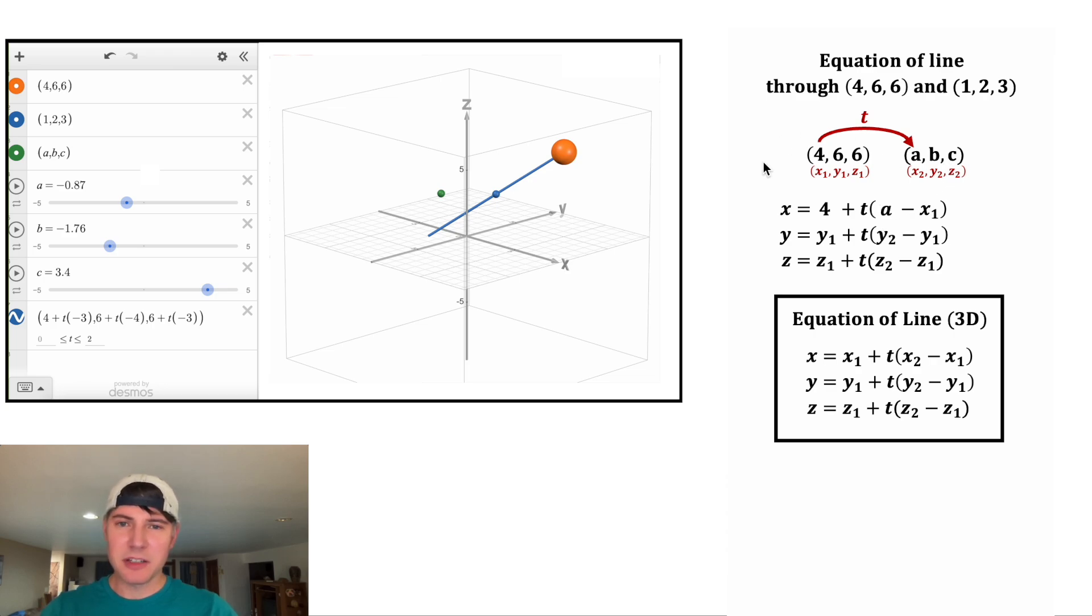And in the place of x sub 1, we'll plug in 4 again. Well, this is not gonna be too difficult, is it? So let's do y next. y sub 1 is gonna be 6. The y sub 2 is the b. And the y sub 1 is the 6 again. And then we'll do the z. z sub 1, we're gonna start at the 6. And then the z sub 2 is gonna be the c. And then z sub 1 is the 6 again. That was a lot easier than I thought it was gonna be. Let's bring this back over here and let's smush everything together. So I just need to plug this into Desmos and that should go through my (A,B,C) point.